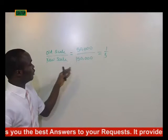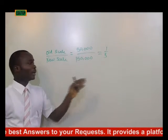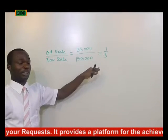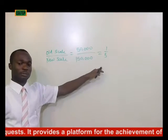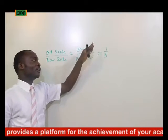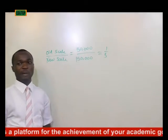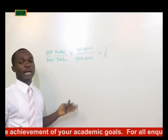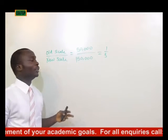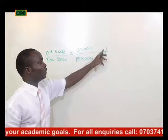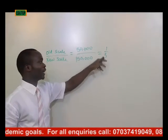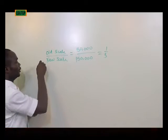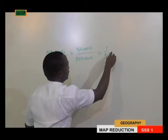So if you get 1 over 3 from this question, it means you are going to do reduction. When you have a fraction, it implies map reduction. You will reduce the map by 1 over 3 — the fraction you have gotten. This will be a reduction.